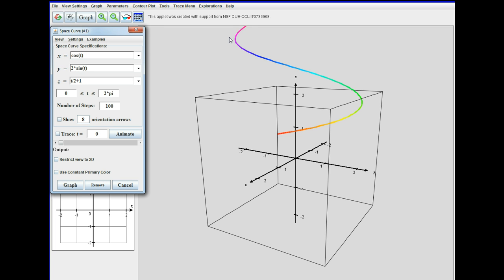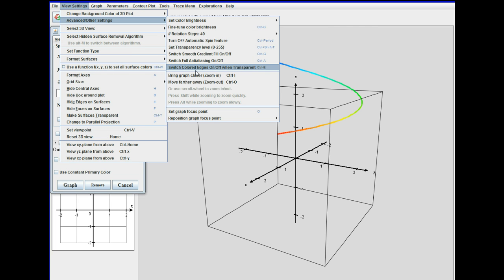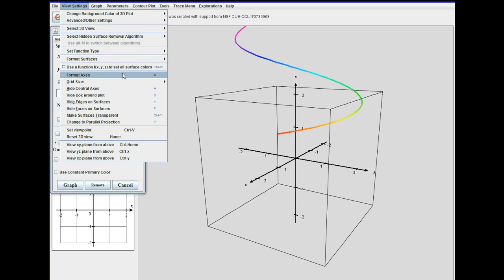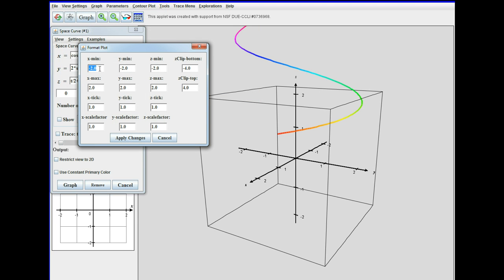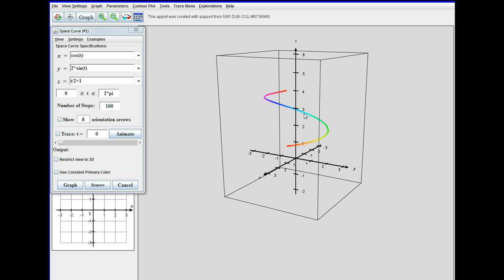So that's okay pretty much except it's going off the frame. We're going to go to view settings, format axes. So we need a little bit better. Let's do minus three to three. We definitely need more in the z. Minus two in the z looks good but maybe about six in the z max. That looks a bit better. So there's our first curve.